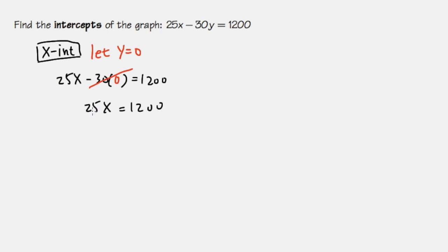Here we have 25 times x equals 1200. So we can just divide both sides by 25. This way, we can cancel the 25, and then we get the x by itself. x will be 1200 divided by 25, that gives us 48.